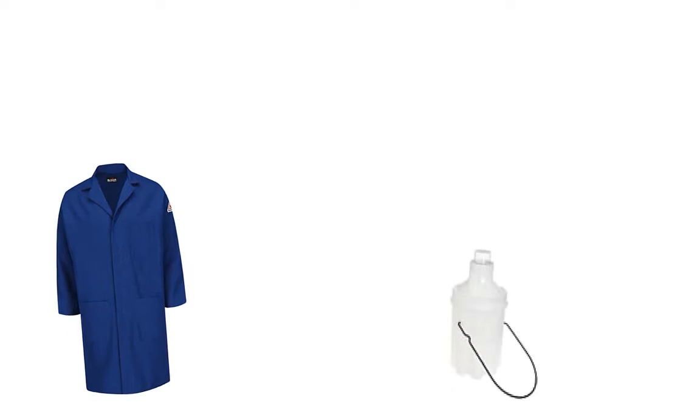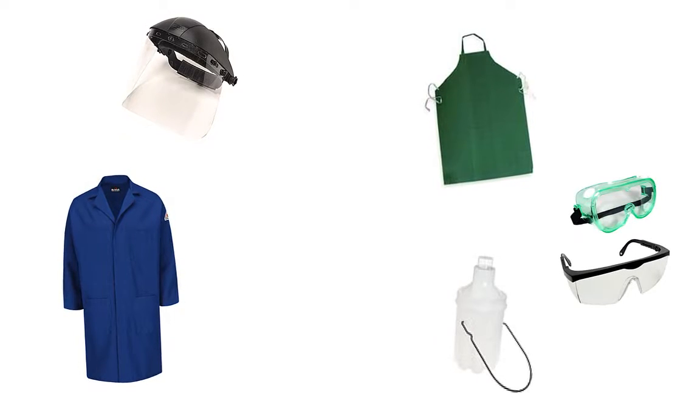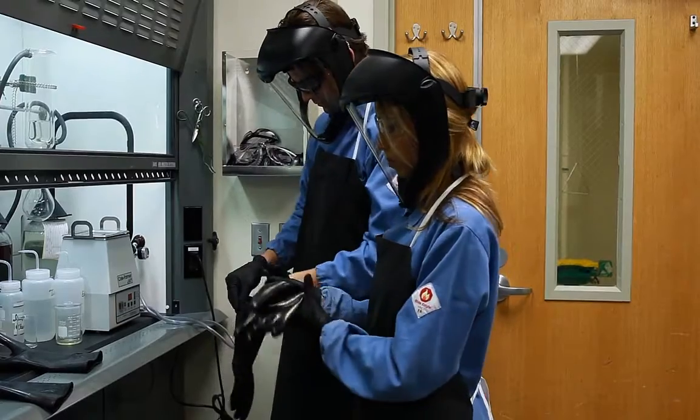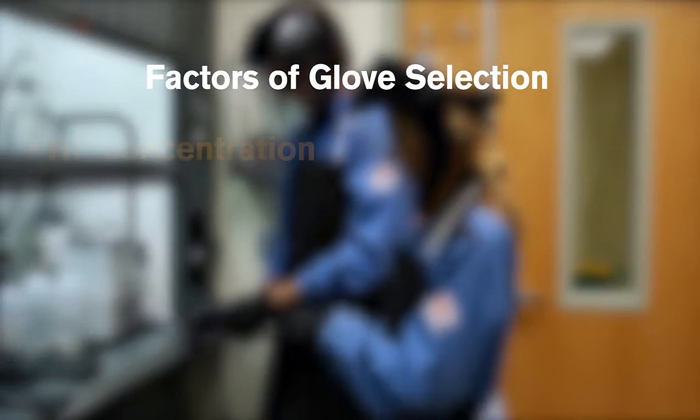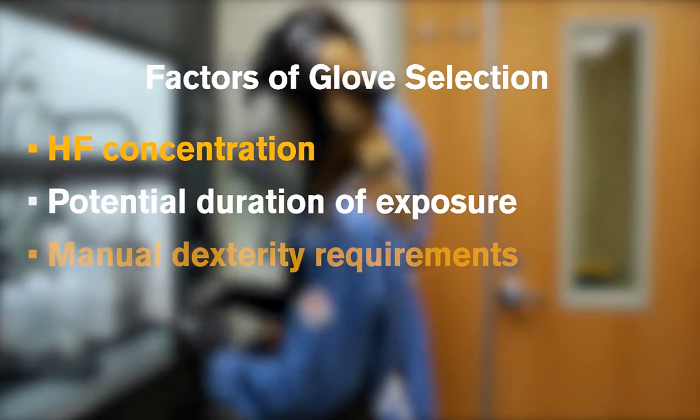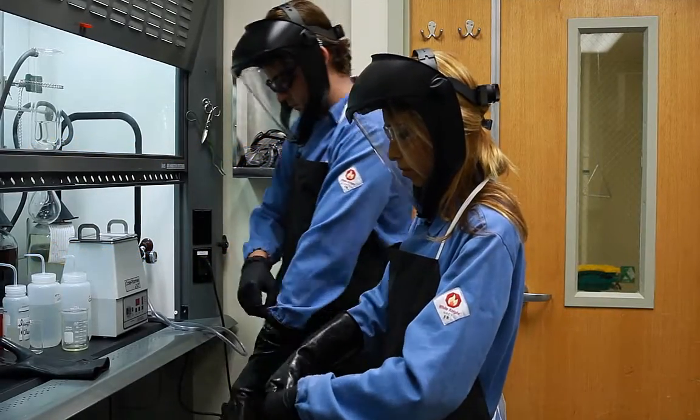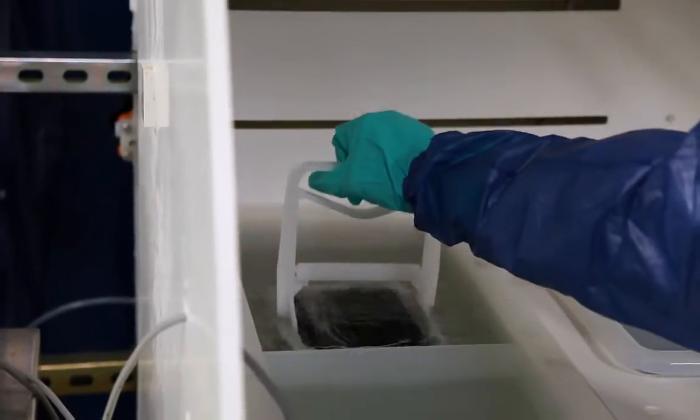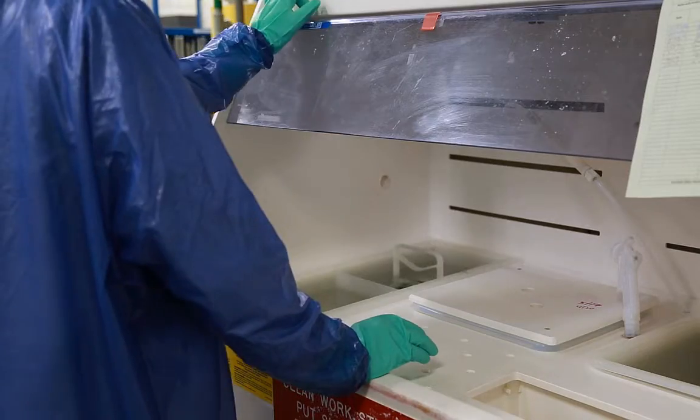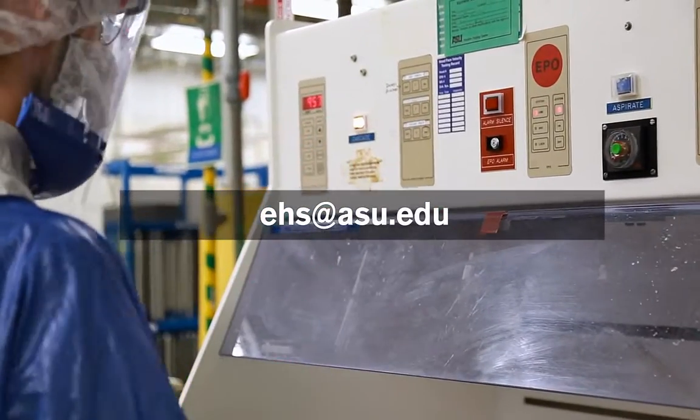It is important to make sure your PPE completely protects you from a potential HF exposure at all times. This is particularly applicable when it comes to protecting your hands and wrists. Factors to consider in glove selection are the HF concentration, the potential duration of exposure, and the manual dexterity requirements. We highly recommend you check your SOP for appropriate glove selection. If additional information is needed, contact the glove manufacturer regarding your glove preference. If still unsure of glove selection, contact EH&S at ehns at asu.edu.